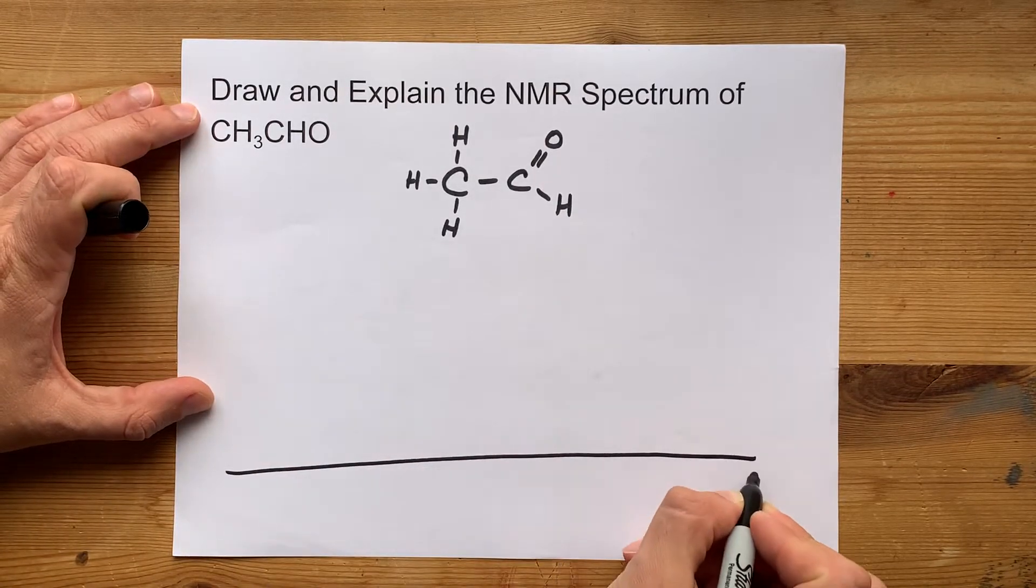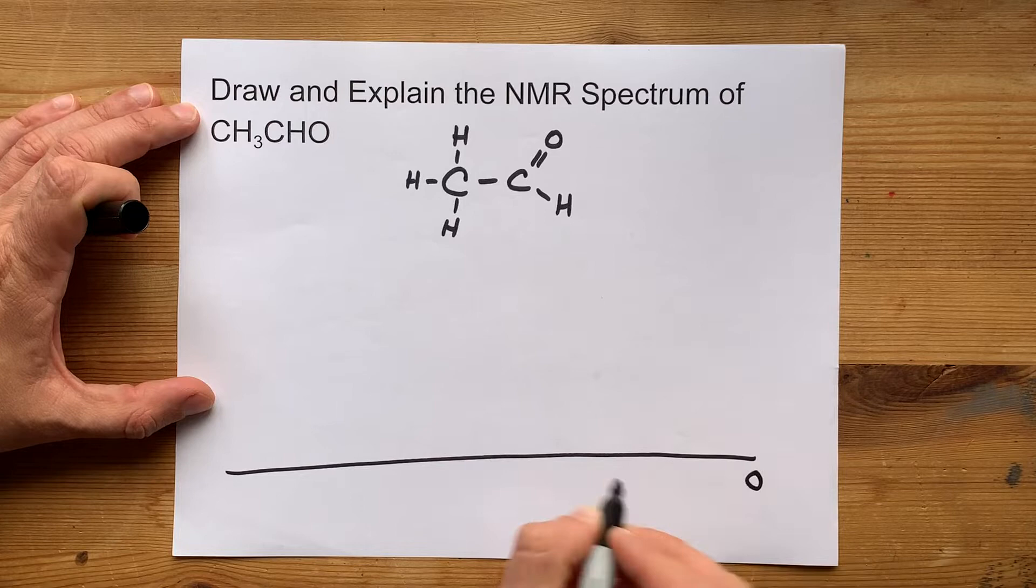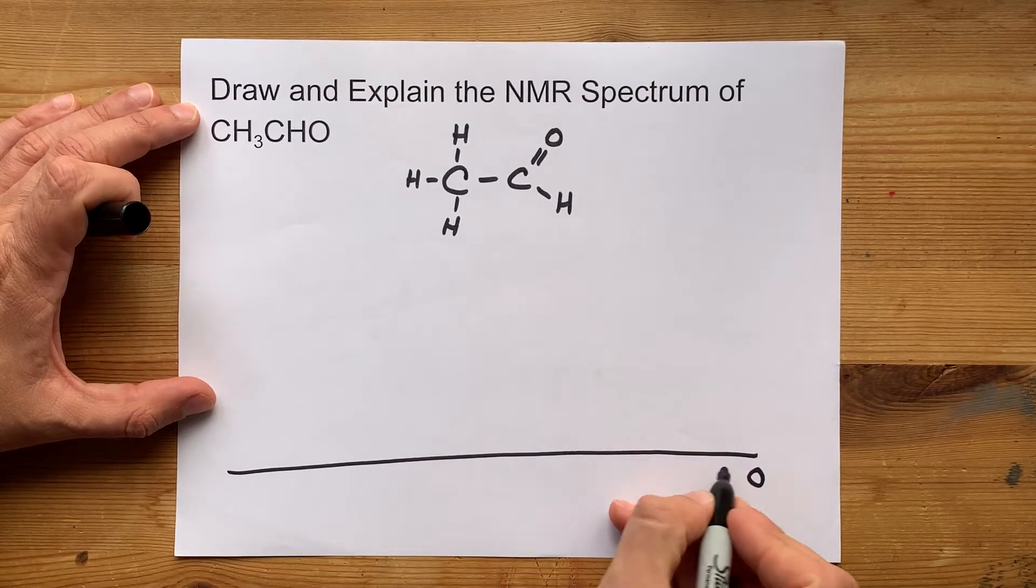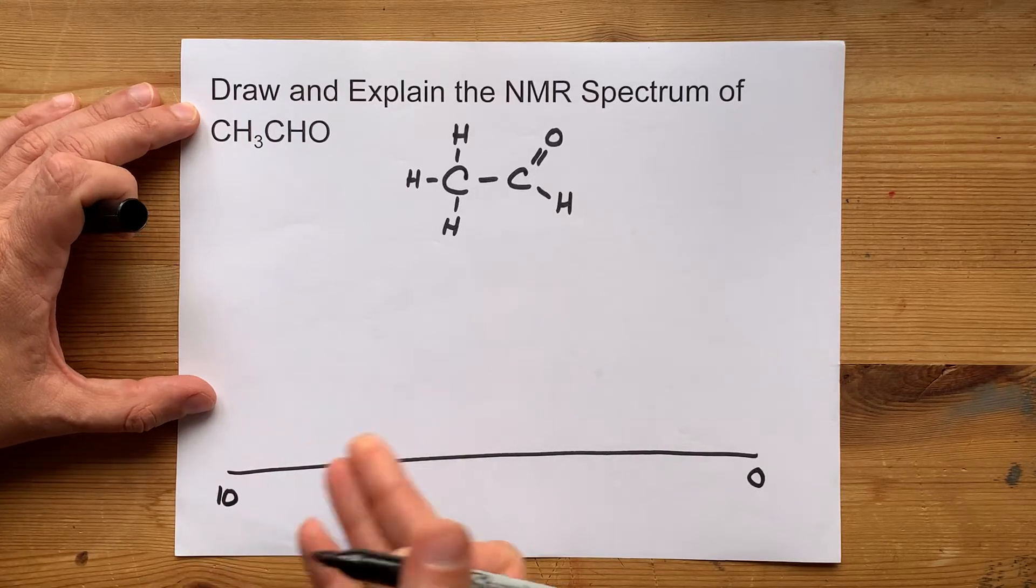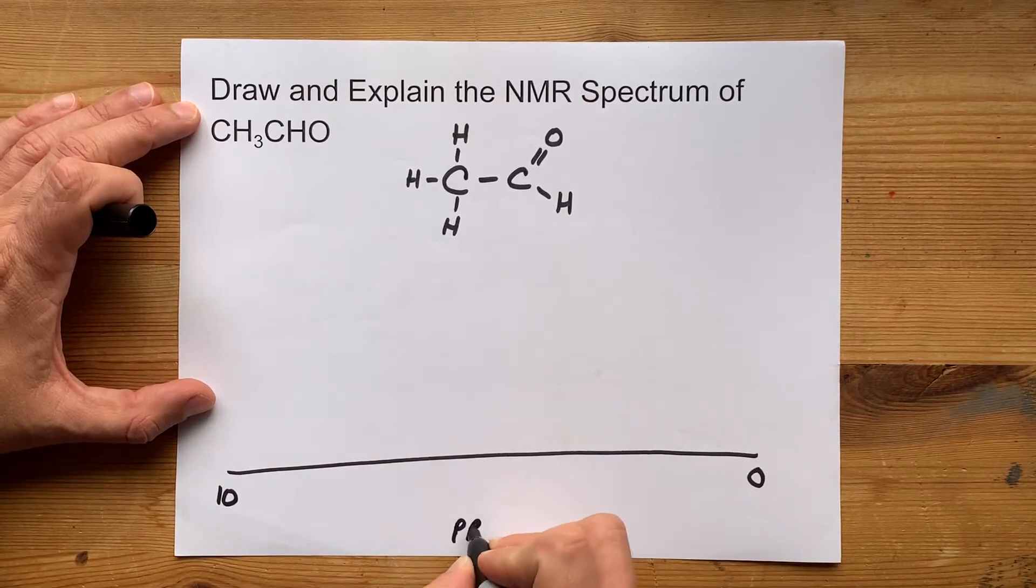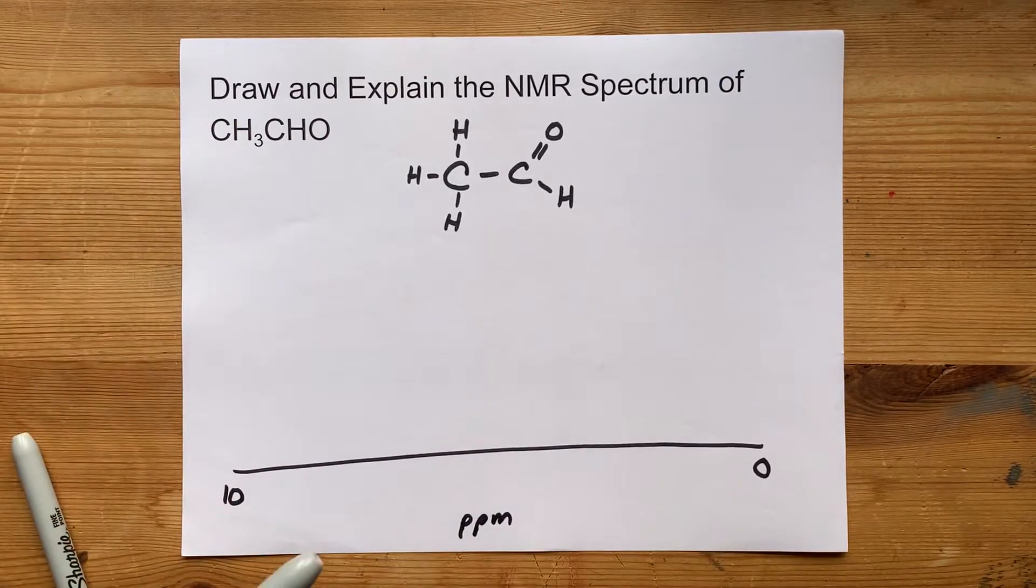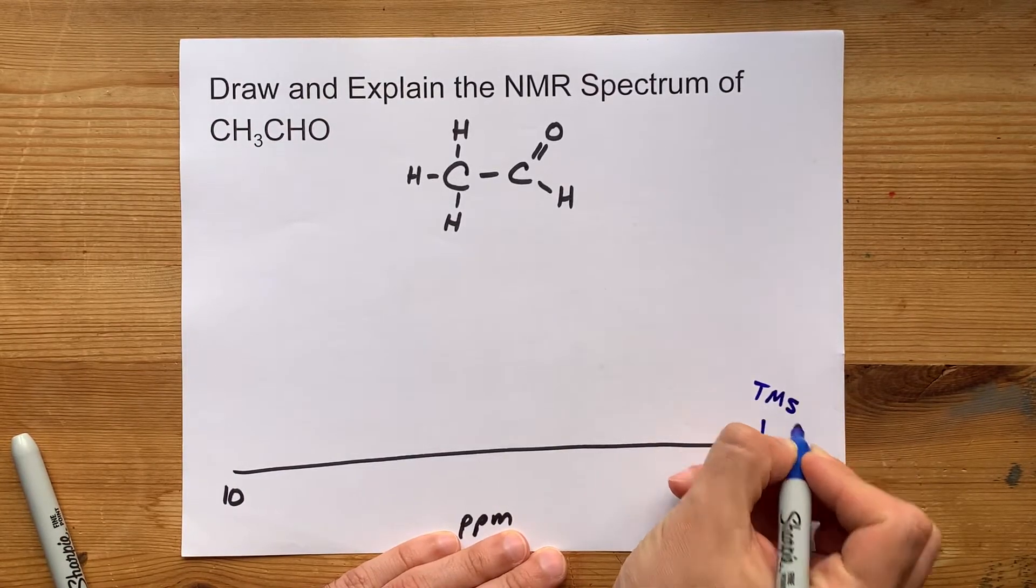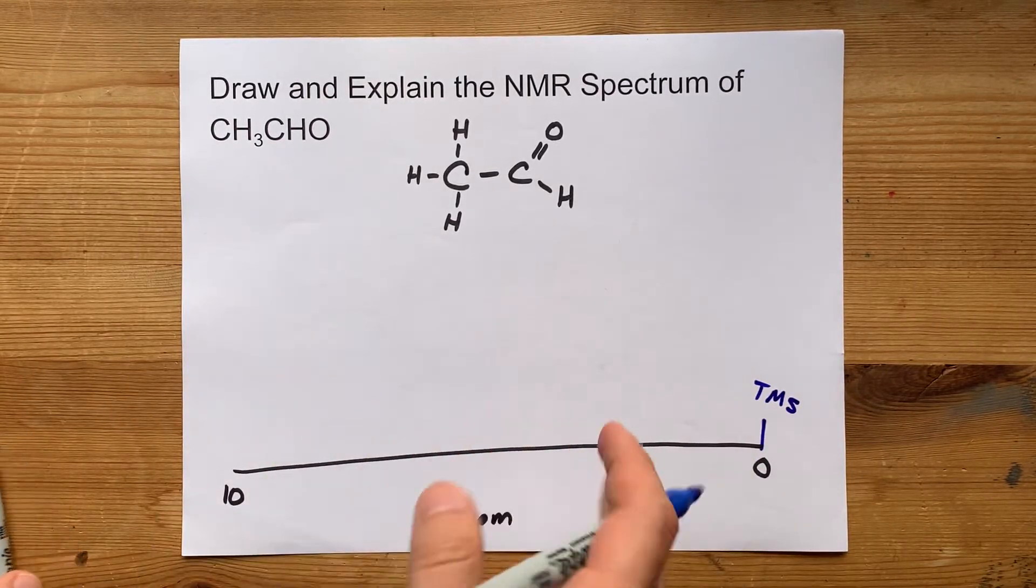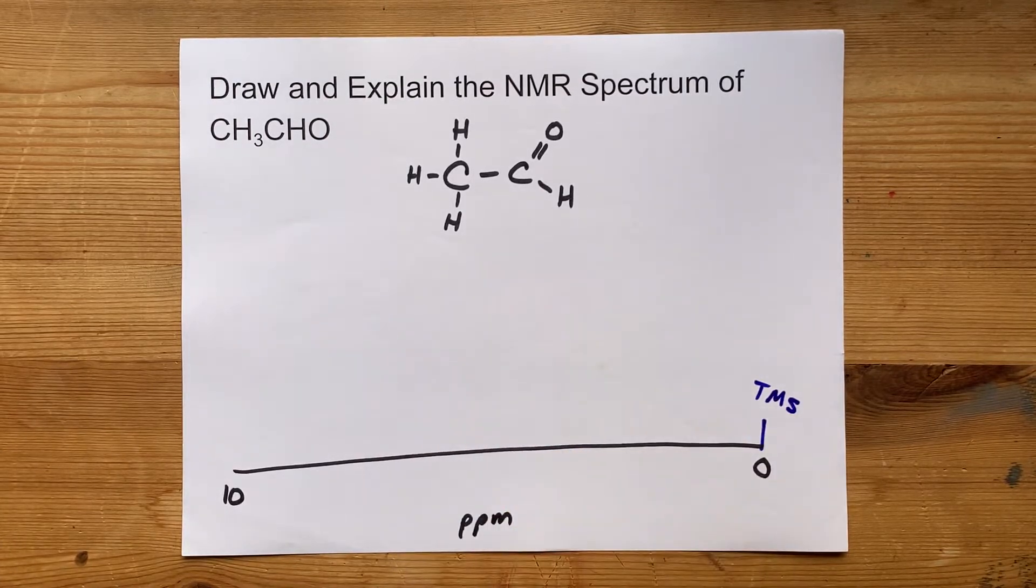Now, the way that NMRs are structured has 0 ppm on the far right. The x-axis can go to 10, sometimes even higher, and it's measured in ppm. There is often a peak exactly at 0 for tetramethylsilane. That's how you know where 0 ppm is.